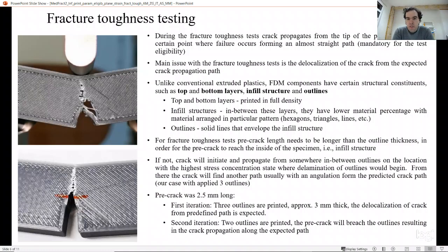During the fracture toughness test, the crack propagates from the tip of the pre-crack until a certain point where failure will occur. From the initial point to the final point, you must have a straight path, which is mandatory for the eligibility of the test. Any creation of the crack path with different angulation or different paths is considered as the failure of the test.